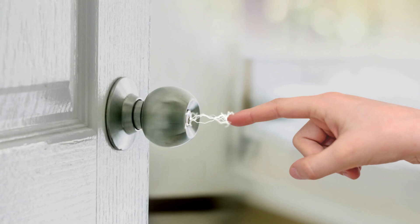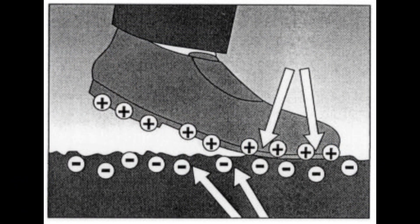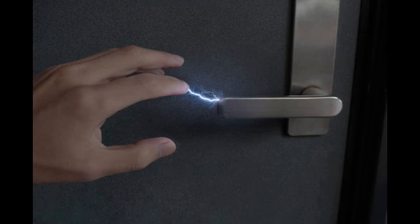When does it happen the most? Static shocks are more common in cold and dry weather. This is because moisture in the air usually helps electricity spread out. But in winter, when the air is dry, the charge stays on your skin longer, making shocks more frequent. That's why you may feel more shocks indoors, especially when walking on carpets or touching metal objects.